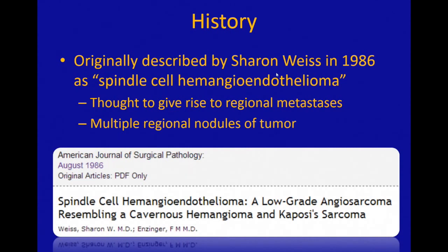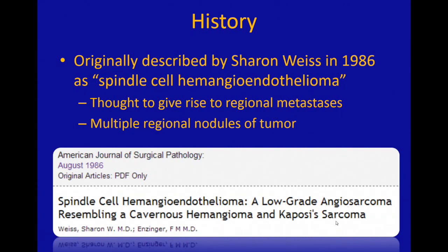In the 1980s, she described spindle cell hemangioendothelioma. These were multiple regional nodules of tumor, and it was thought that they had regional metastases — that's why it was considered to be a hemangioendothelioma, or a low-grade variant of angiosarcoma.